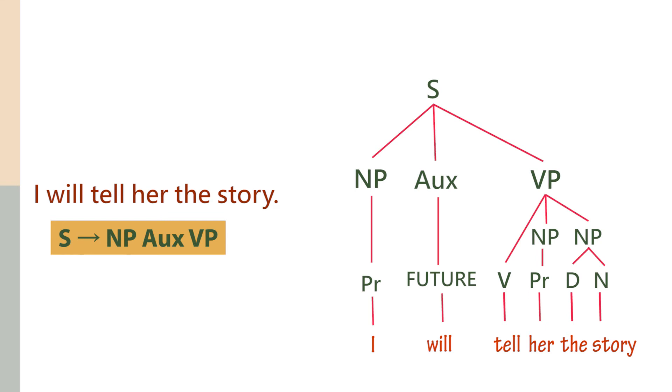The first phrase structure rule accounts for the sentence, but we need more. What is the noun phrase here? The noun phrase consists of a pronoun. What about the VP? The VP consists of a V followed by an NP followed by an NP. The second NP consists of a pronoun, but we already wrote that rule. The third NP consists of a determiner followed by a noun.